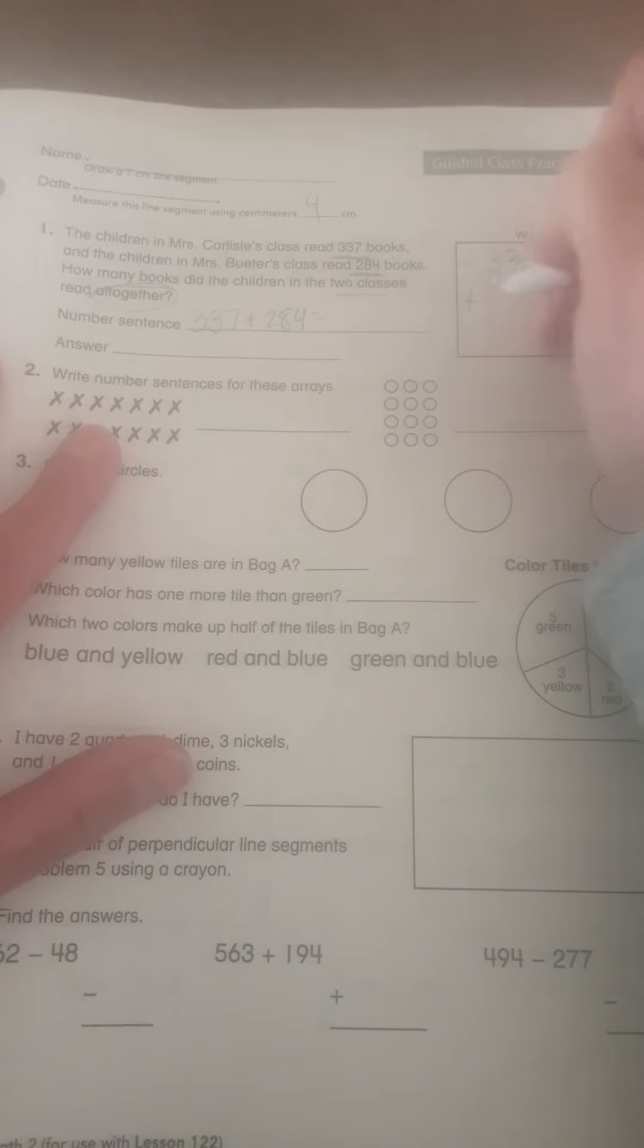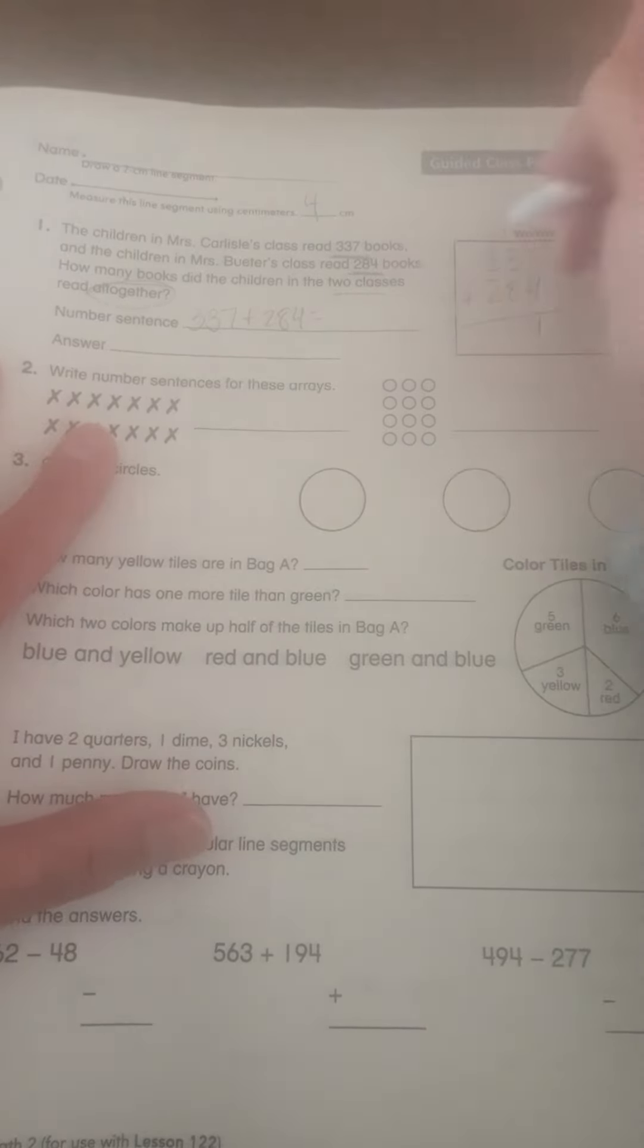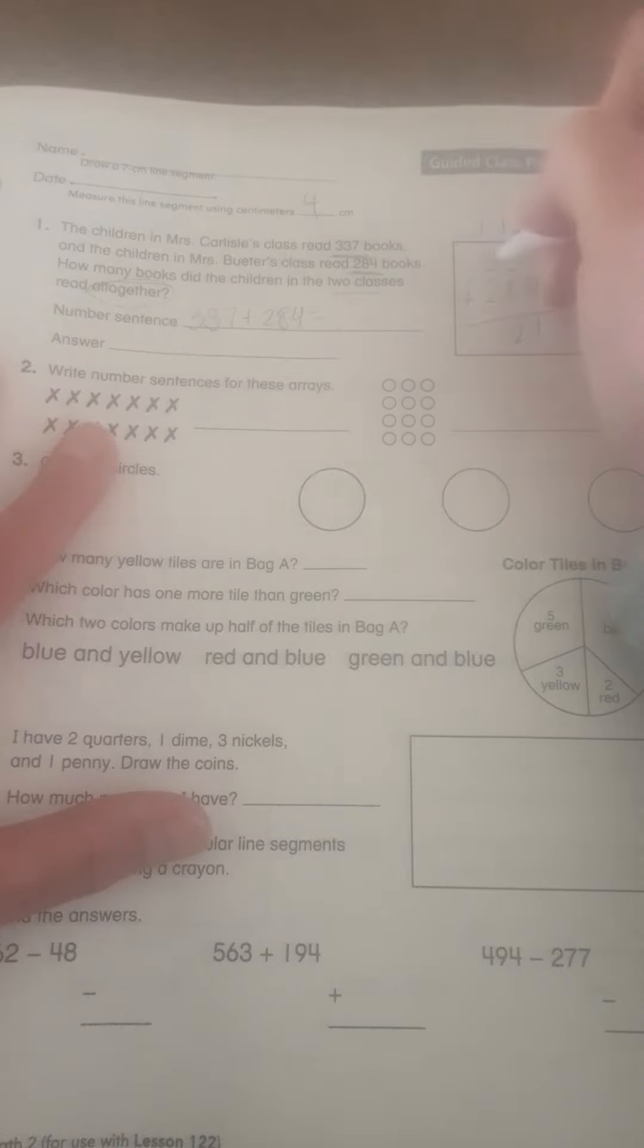So we have 337 plus 284. And now I'm going to go up here and make sure that I show my work. 7 plus 3 is 11. Carry the 1. Bring down the 1. 8 plus 3 plus 1 is 12. Carry the 1. Bring down the 2. 3 plus 2 is 5. Plus 1 is 6. So I have 621 books.